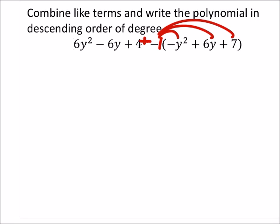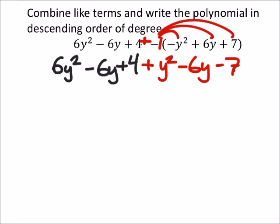You just know to change the signs on the inside. So this would end up being plus y squared minus 6y minus 7. And I get that from this negative one times negative y squared. That's positive now. Negative one times positive 6y is a negative 6y. And negative one times positive 7 is negative 7. So maybe we can see that a little bit better this way.